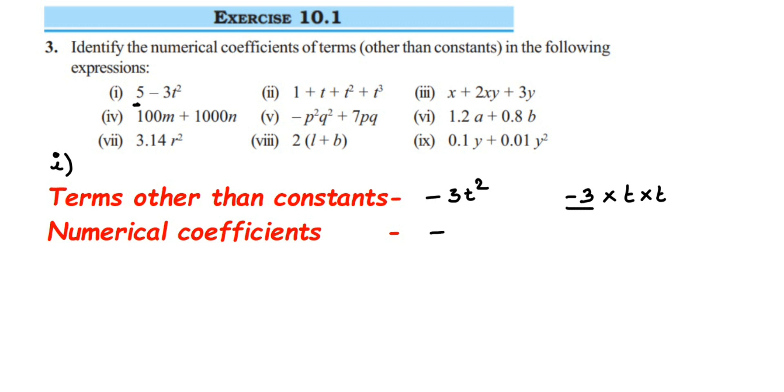You should also take the sign. If there's a negative sign, consider the negative sign as well. So for this term, the numerical coefficient is minus 3.